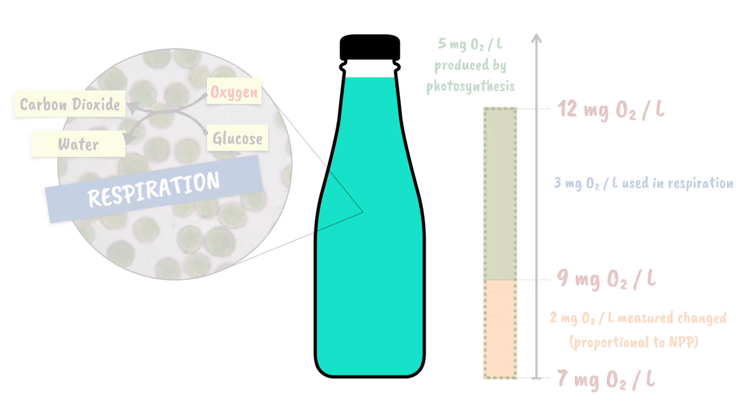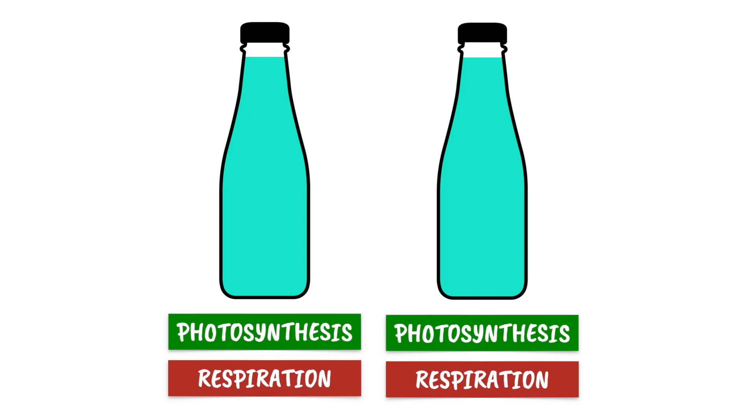Well, the solution is quite simple. I need to replicate this setup with a second bottle, but somehow allow respiration to occur and prevent photosynthesis occurring. To do that, I just need to cover the second bottle so that no light can reach the phytoplankton, making photosynthesis impossible.